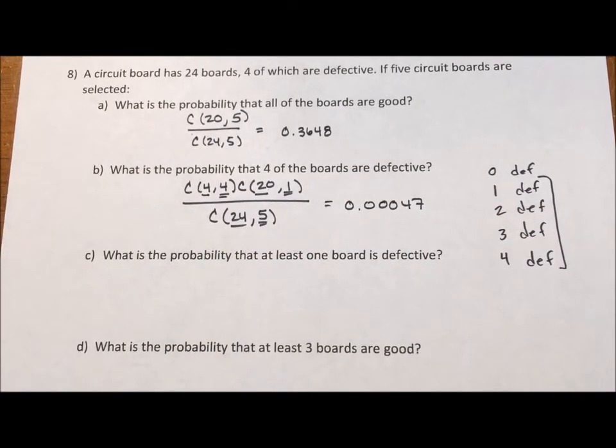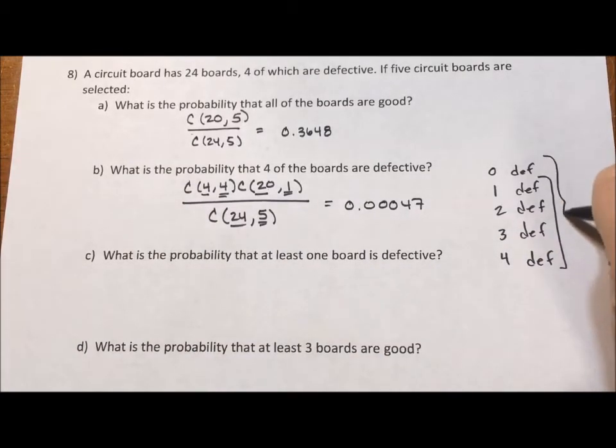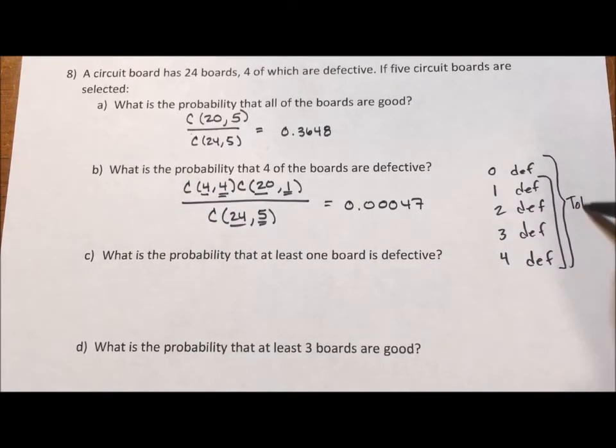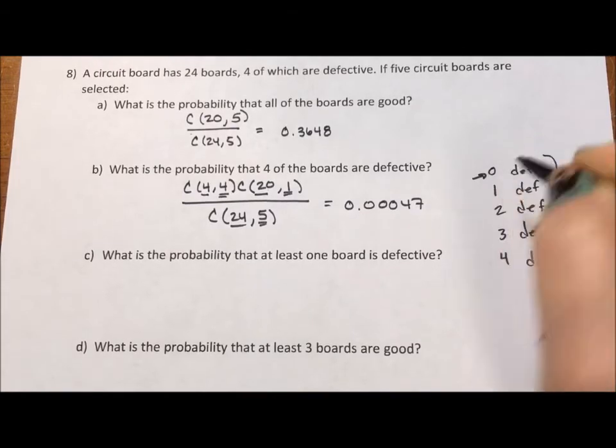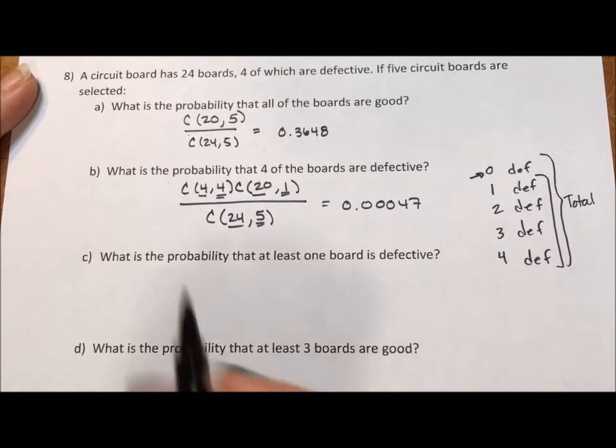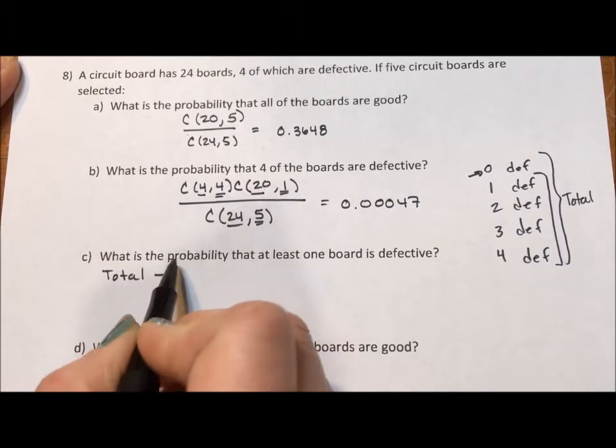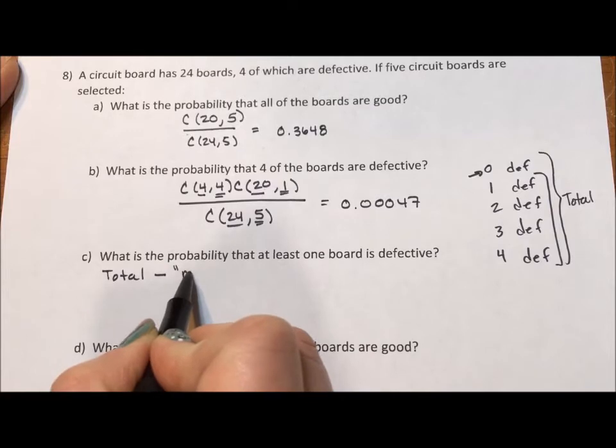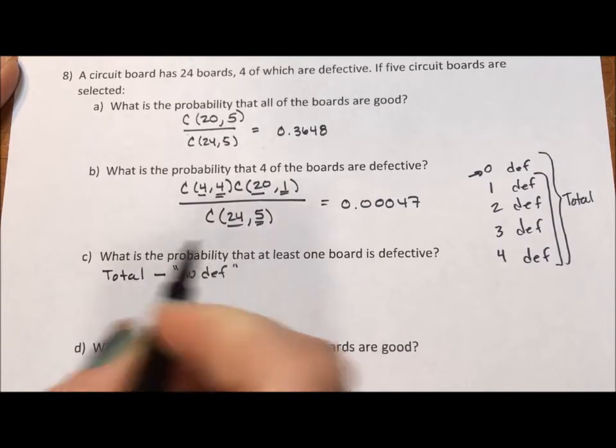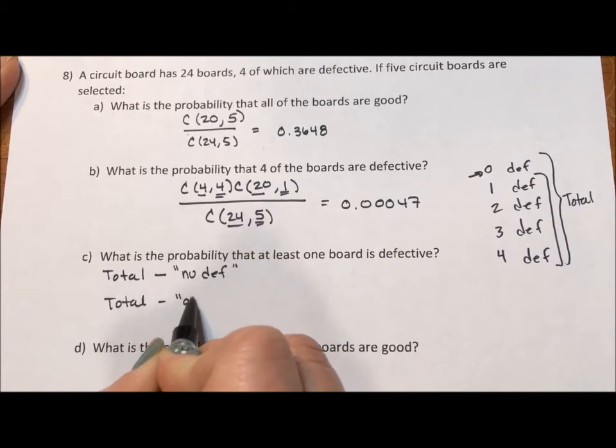At least one means we want to add all of these together. The problem with adding all of these together is that's going to be a lot of work, more work than I want to do. But what I could do is I could take this, which is the total, and subtract off the all good. And I should be, essentially what I'm doing is the total minus no defective, which is going to be the same as the total minus all good.